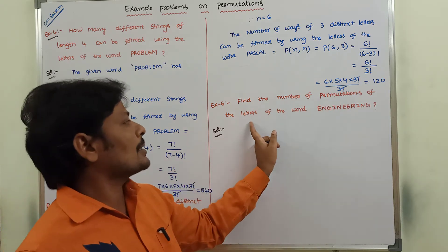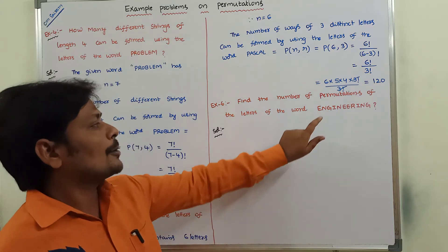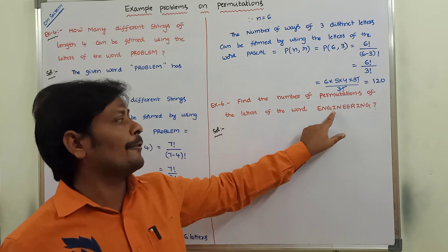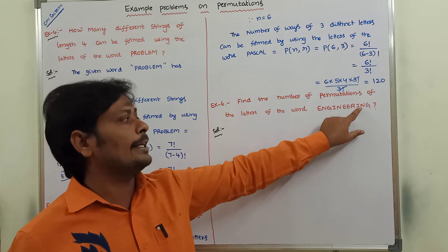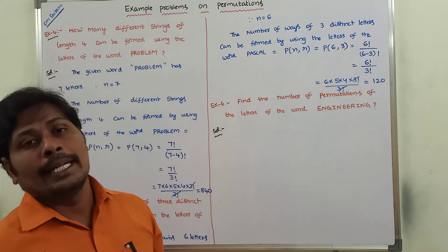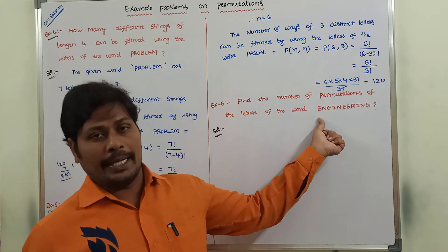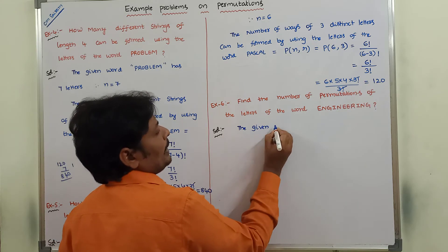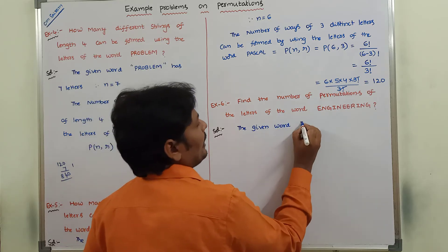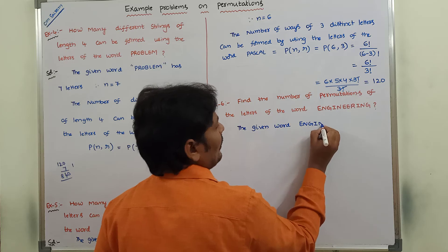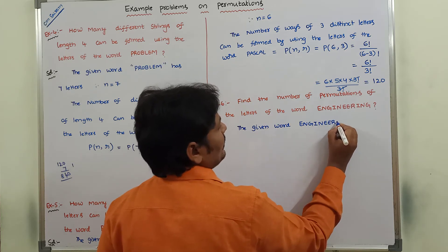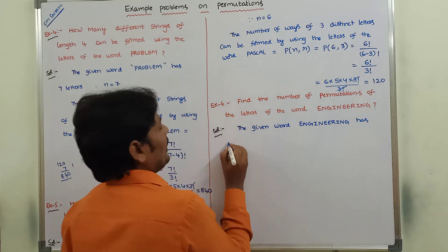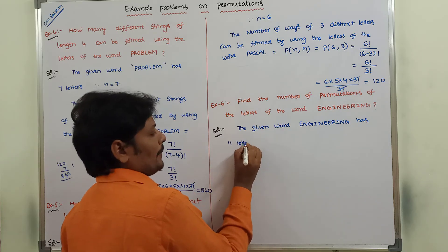Next, find the number of permutations of the letters of the word ENGINEERING. The given word is ENGINEERING. How many letters are there? 1, 2, 3, 4, 5, 6, 7, 8, 9, 10, 11 — so 11 letters are there in the given word ENGINEERING.